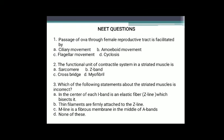Question 1: Passage of ova through the female reproductive tract is facilitated by — ciliary movement, amoeboid movement, flagellar movement, or cyclosis? The correct answer is ciliary movement. The cilia of the fallopian tube (oviducts) show movement for the transport of ova inside the reproductive tract.